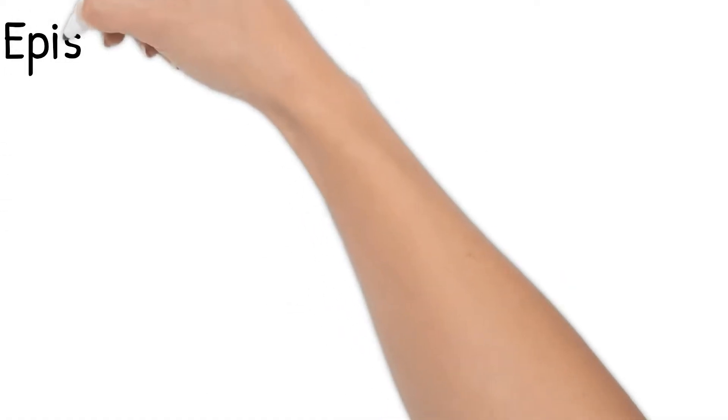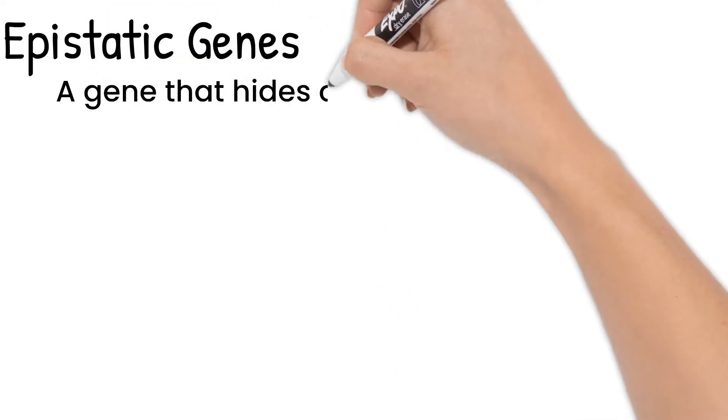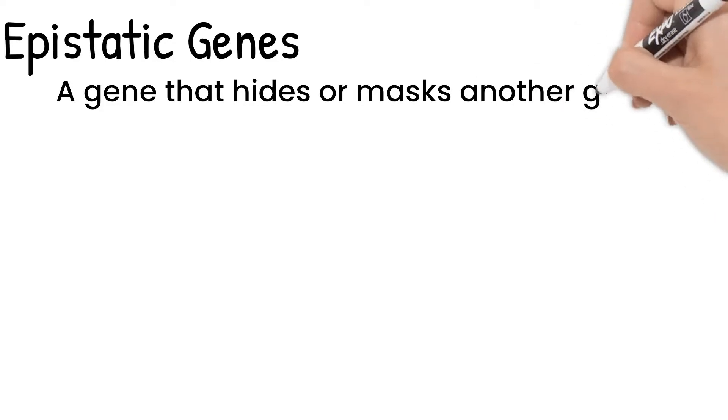First, epistatic genes. Sometimes there is a gene with the sole purpose of hiding the effect of another gene. These genes that hide or mask a gene are called epistatic genes.